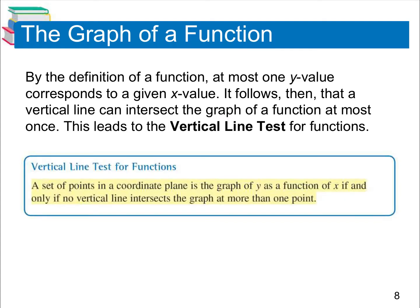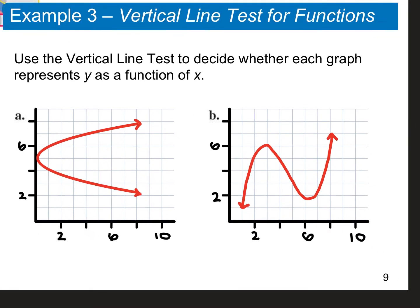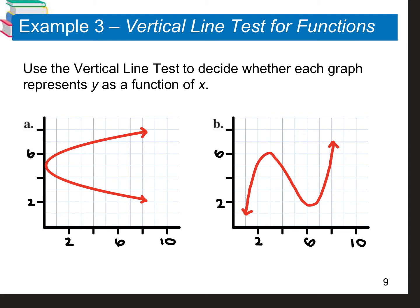For our next examples, we're going to be looking at whether or not these graphs represent functions. We have the vertical line test. We can draw a vertical line anywhere throughout that coordinate plane, pulling it all the way from left to right — that vertical line should only cross the drawn line one time if it is a function. If it crosses more than once, it is not a function. Looking at example A, if we draw a vertical line anywhere on that coordinate plane, we see it crosses up top and on the bottom, so this one is not a function.